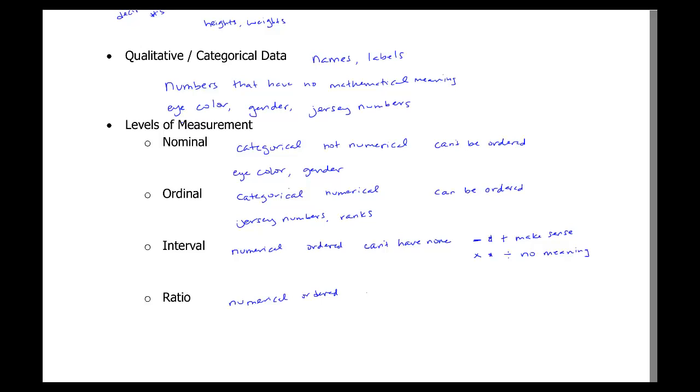For ratio, again before I do examples we'll explain both. So ratio, it is possible to have none. And you can do all kinds of math with it. You can add and subtract and multiply and divide. It all makes sense. So you could ask yourself, can I have twice as much or half as much? And if your answer is yes, you have a ratio variable.